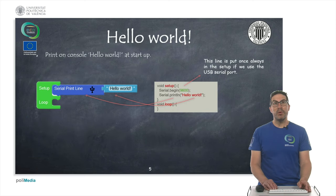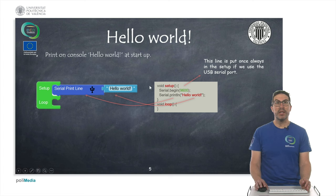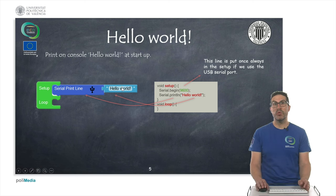In this first example, the idea is to print the sentence hello world at the beginning of when the code starts. And for that we have used the serial print line instruction, as you can see here, and a text instruction in which we have just simply typed the sentence we want to display.